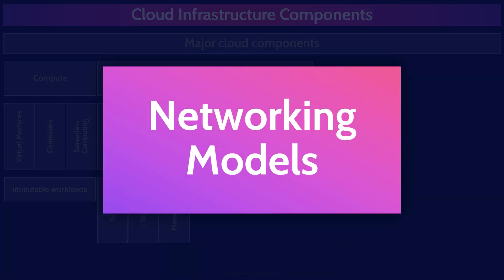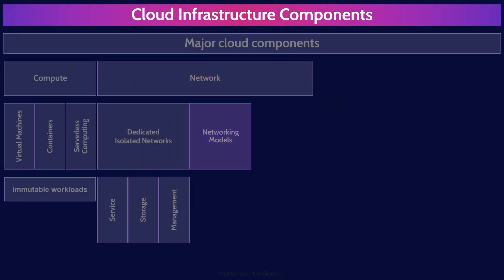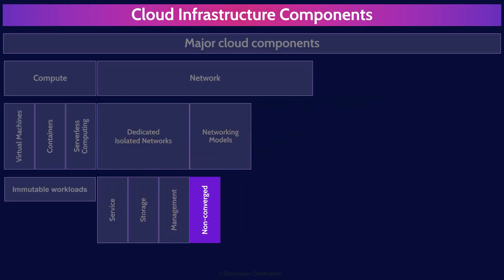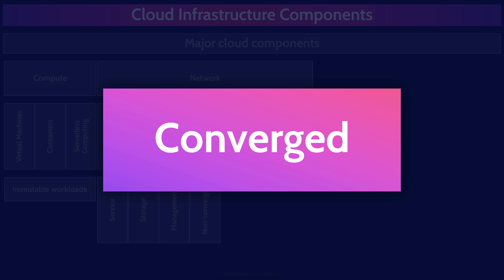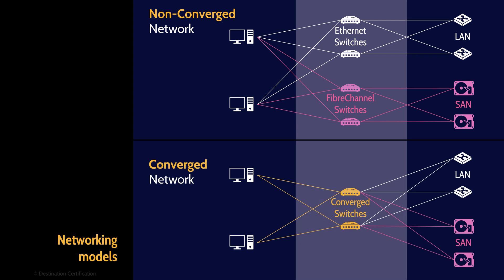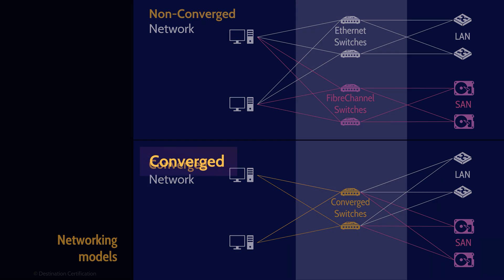In a non-converged network model, you will have three dedicated isolated networks: service, storage, and management. However, in a converged network model, you merge two of these — the service and storage networks. You would never ever want to converge your management network. As I said, the management network must always be a dedicated isolated network. In a non-converged network, the service network (shown as the LAN) and the storage network (shown as the SAN) are separate. In a converged model, the service and storage networks are merged into a single converged network.